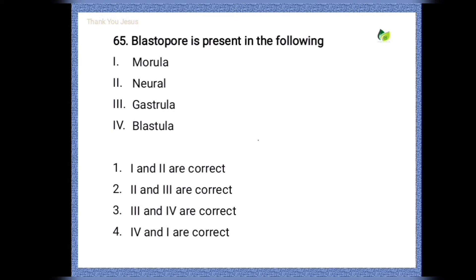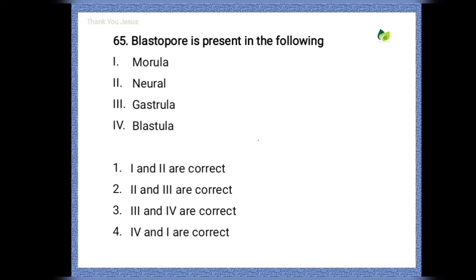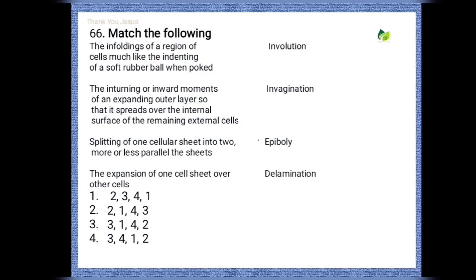Blastopore is present in which of the following embryonal stages? The four options are morula stage, neural stage, gastrula stage, and blastula stage. The correct option is two and three — neural and gastrula stages contain the blastopore.